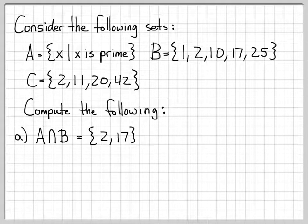What about 10? 10 is not prime, so it won't be in this set. 17 is prime, so 17 is in B and also in A. And 25 is not prime, so 25 is not in A and therefore not in this set. So the set A intersect B is simply the set consisting of 2 and 17 for this specific example.